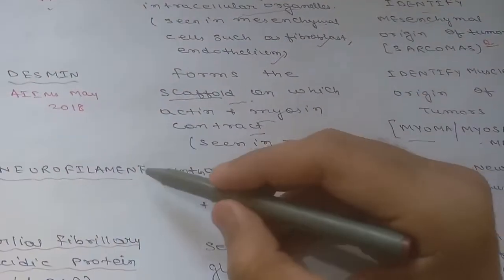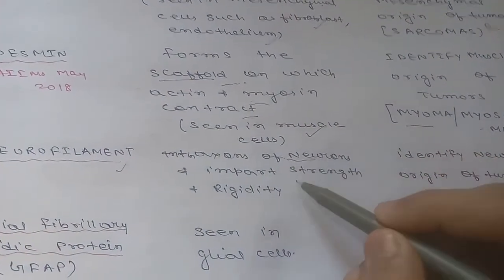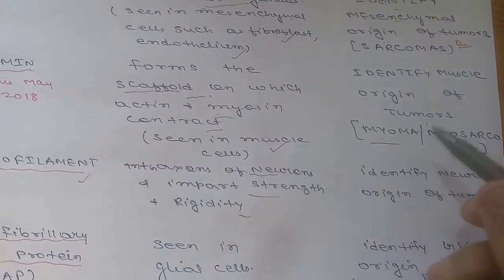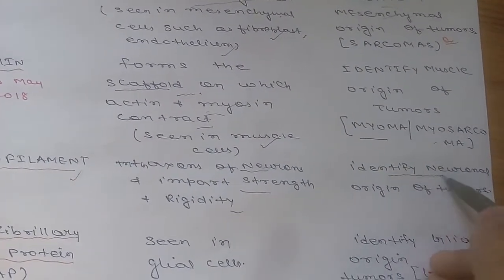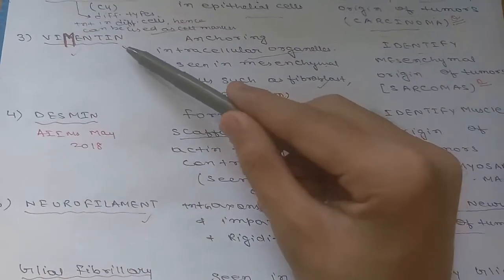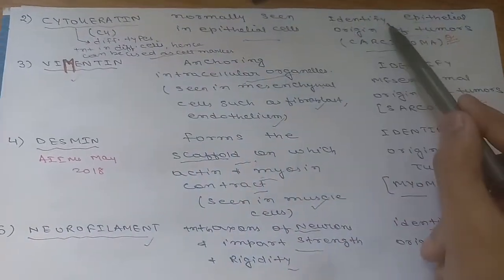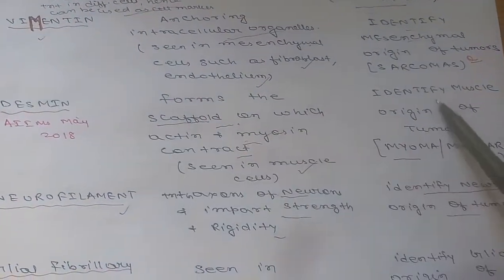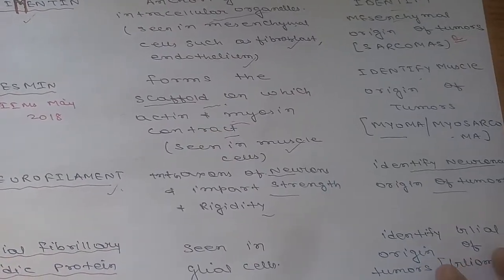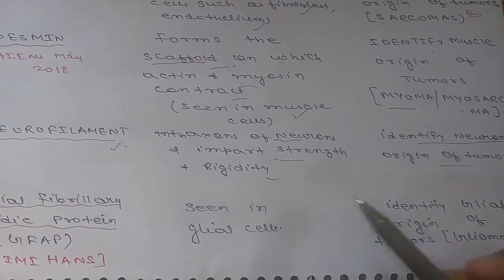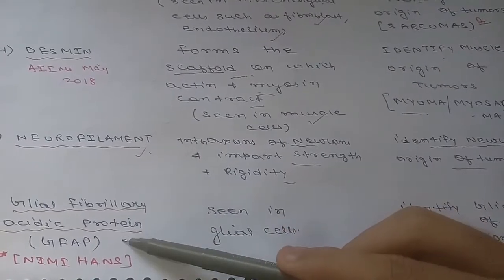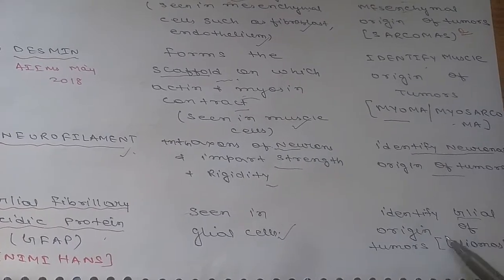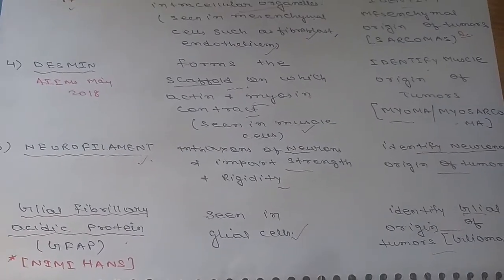Neurofilament is present in axons of neurons, imparting strength and rigidity to axons. In pathology it is used for identification of neural origin of tumors. The last intermediate filament is glial fibrillary acidic protein, GFAP, seen in glial cells and used to identify glial origin of tumors.